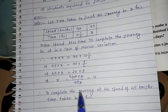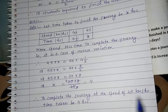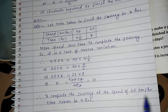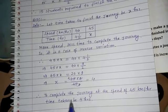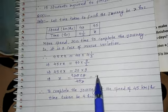So to complete the journey at the speed of 45 km per hour, in the return journey at the speed of 45 km per hour, the time taken is 4 hours.